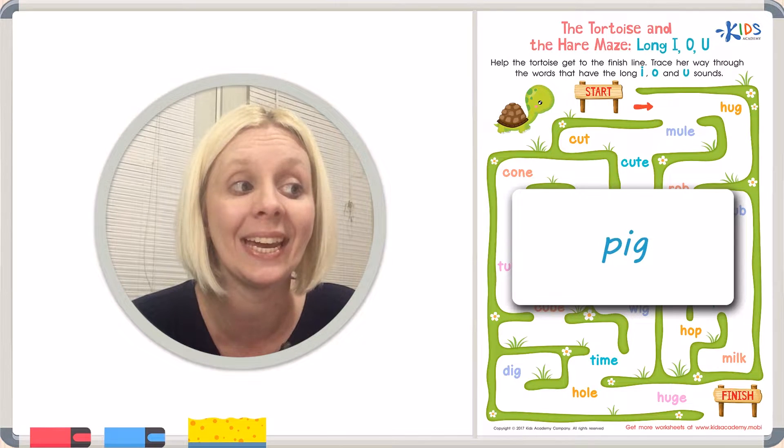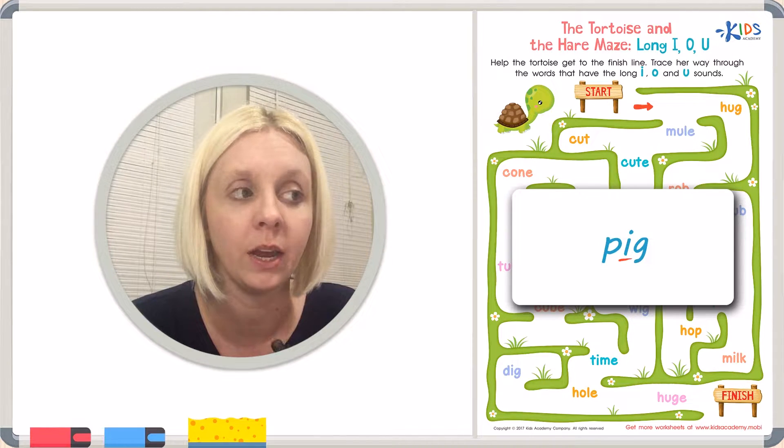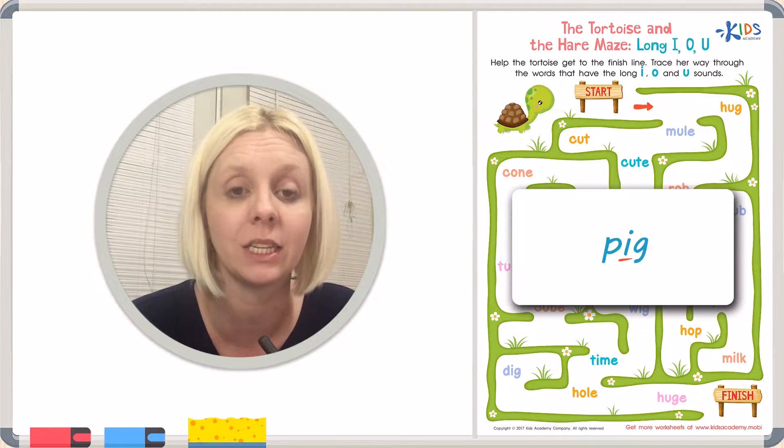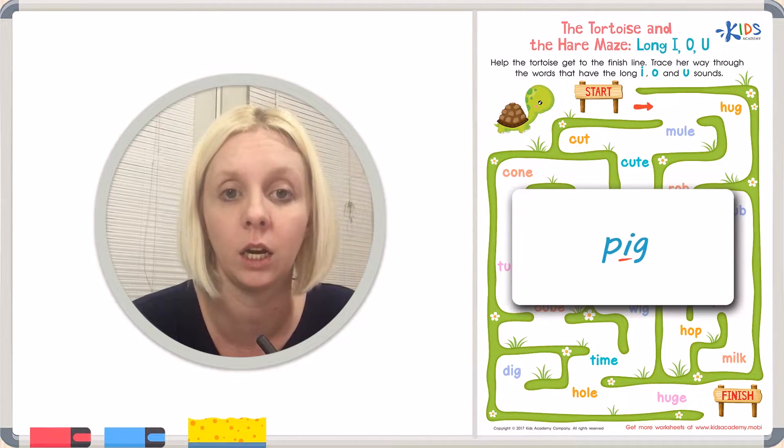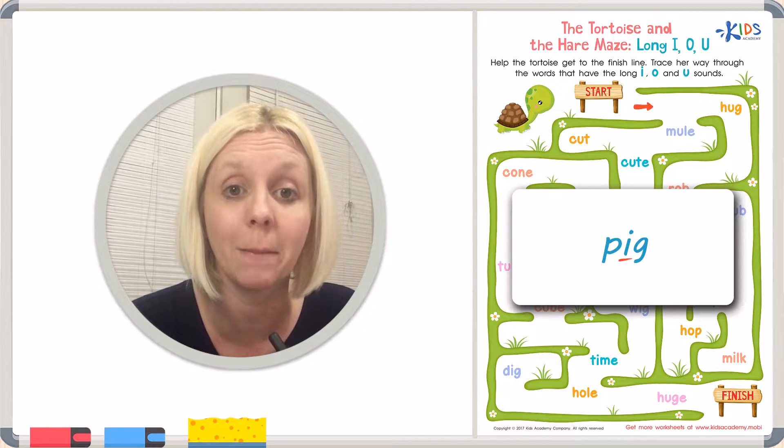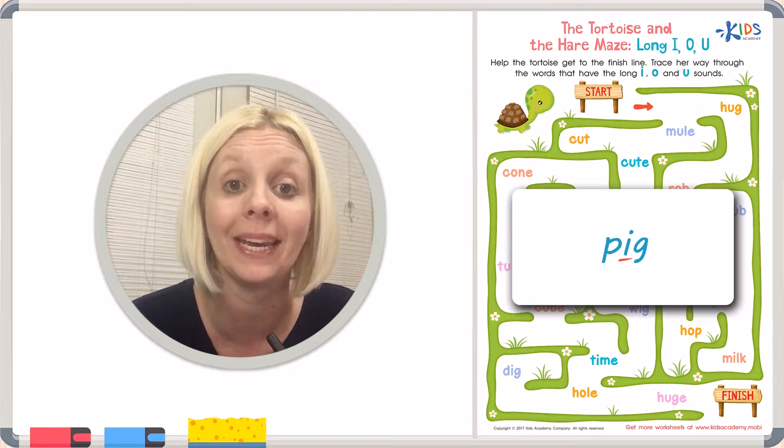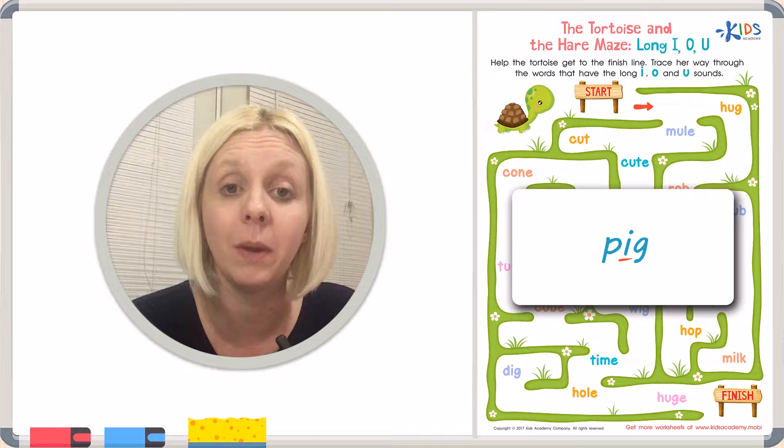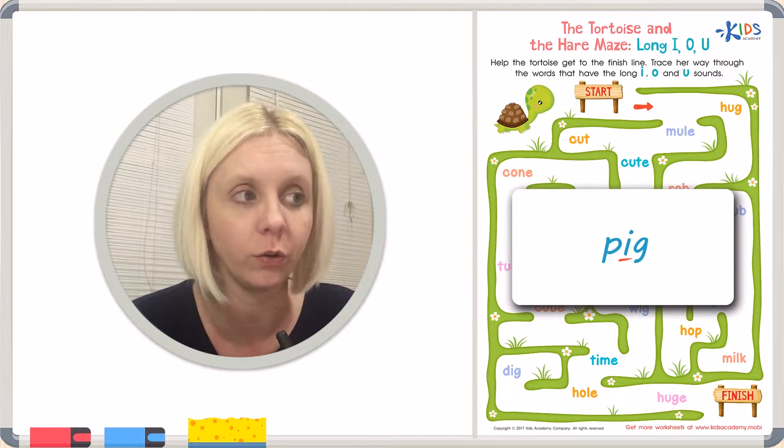So for example, this is the word pig. And I want to underline the vowel here, I, but I want you to listen to the sound it makes. It says pig. Does this I here make an I sound or does it make an I sound? Pig. I, right? So that's gonna be a short I sound.